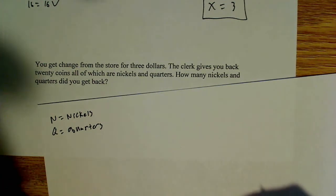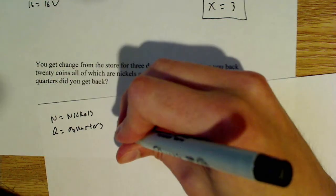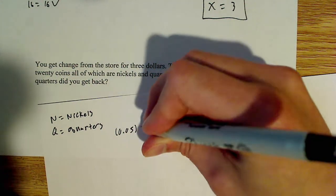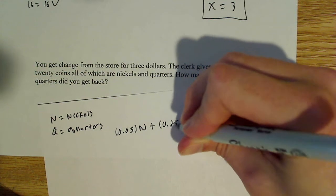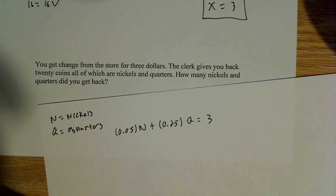And we know that we have a total of three dollars. So that tells me that 0.05n plus 0.25q has to equal three.